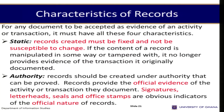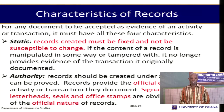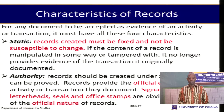There are four main basic characteristics of records. The first is static: records, once created, must be fixed and not be susceptible to change. Once a record is accepted as reflecting the transaction that took place, nobody should tamper with it without authority. If it is tampered with, it cannot claim to serve the purpose for which it was generated and will not be accepted in a court of law.